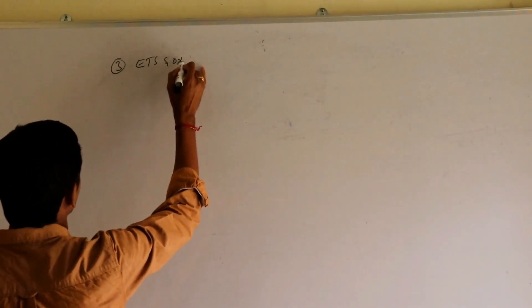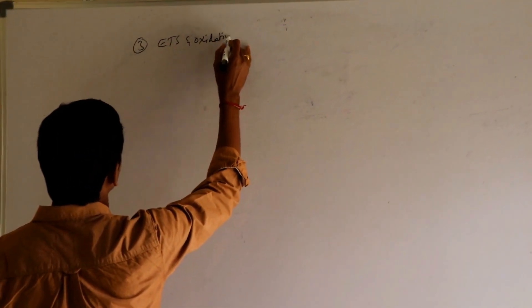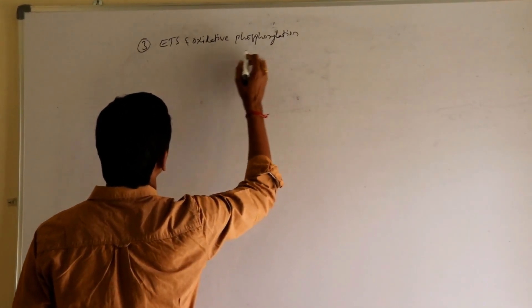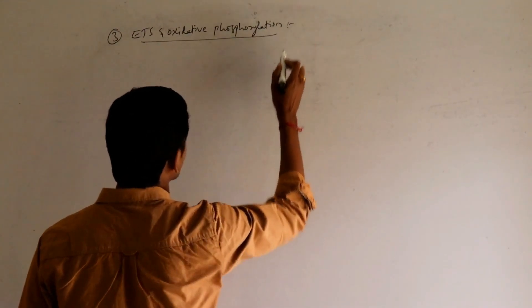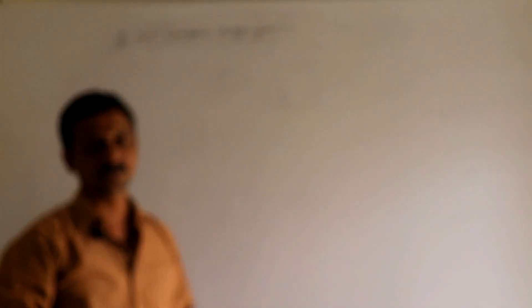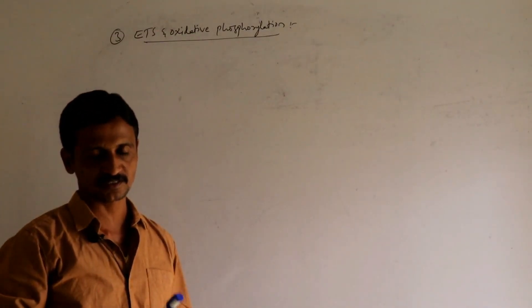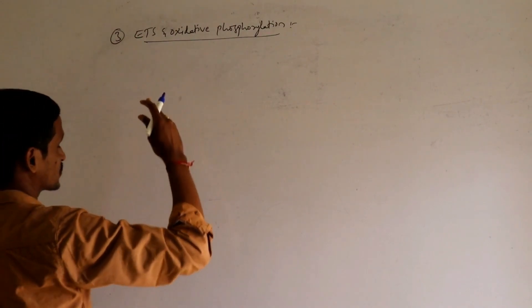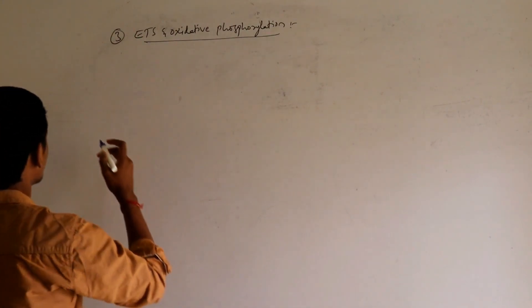The third step is the electron transport system and oxidative phosphorylation. Here the bigger energy-rich substances like NADH2 and FADH2 are supposed to be converted into a simpler energy-rich substance called ATP. Let us see the conversion of NADH2 and FADH2 into ATPs.